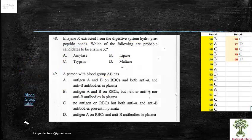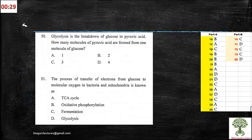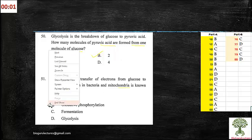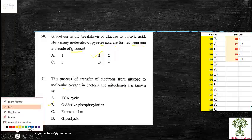Next question, the 50th one. Glycolysis is breakdown of glucose to pyruvic acid. How many molecules of pyruvic acid are formed from one molecule of glucose? The answer is 2. Next, the process of transfer of electrons from glucose to molecular oxygen in bacteria and mitochondria is known as oxidative phosphorylation.